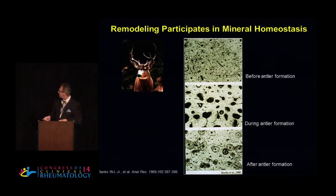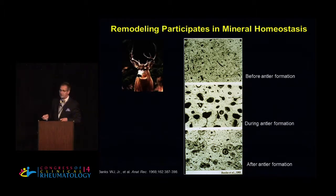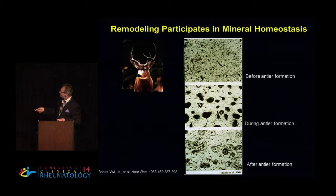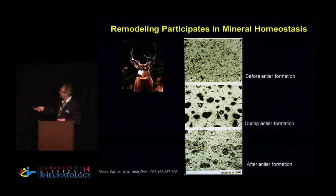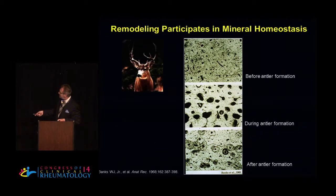A nice example of this, published by Dr. Banks, looked at deer rib bone prior to antler formation season, during antler formation season, and following it. What you see is a tremendous removal of calcium from the rib and presumably other bones to supply the rapidly growing antlers, which have a tremendous demand for calcium. If this were to remain, the antlers would have been created at the expense of the skeleton, which would not be good. But because there is a very tight coupling between resorption and formation, once the demand for calcium has subsided, osteoblasts can go through and repair the damage, and the skeleton remains intact.